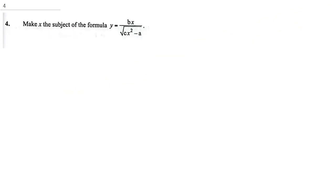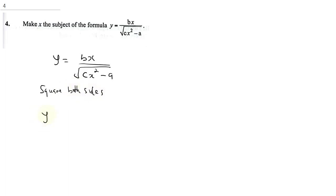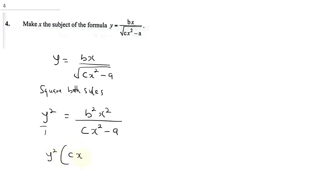Question 4 says: make X the subject of the formula, where Y equals BX all over the square root of CX squared minus A. To make X the subject of the formula, the first thing you need to do is eliminate the square root by squaring both sides. So Y squared equals B squared X squared all over CX squared minus A, since the square root is removed.